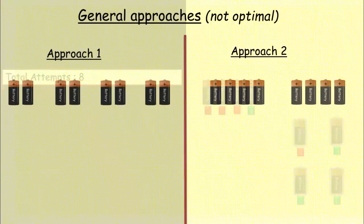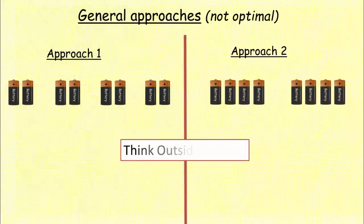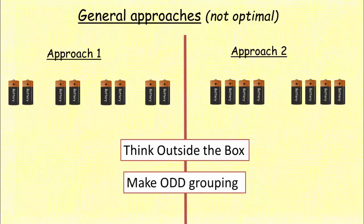These are not optimal solutions. So how to think outside the box? The key to optimal solution is in the grouping. In approach one you have four groups of two batteries each, and in the second approach you have two groups of four batteries each. You see everything in even numbers. Did you think of odd number groupings?